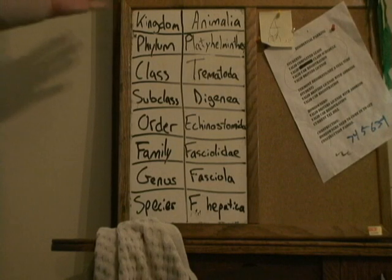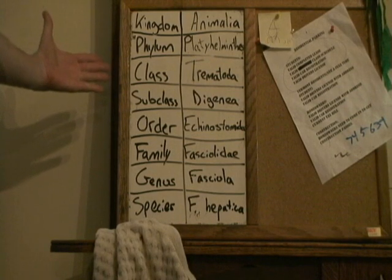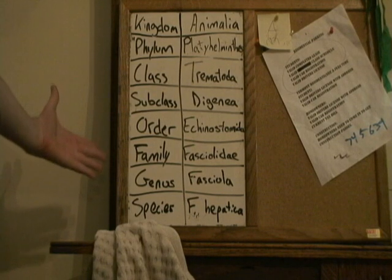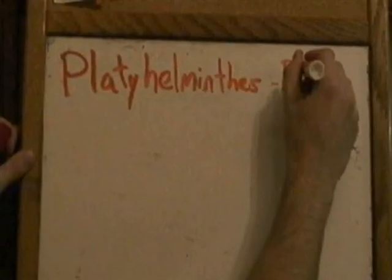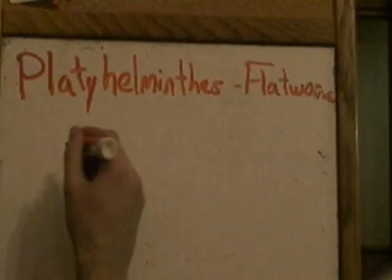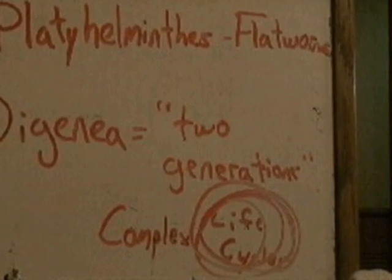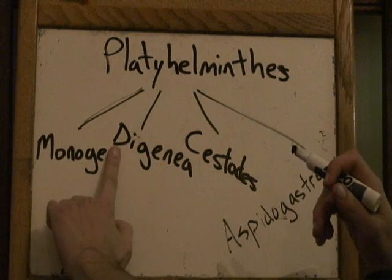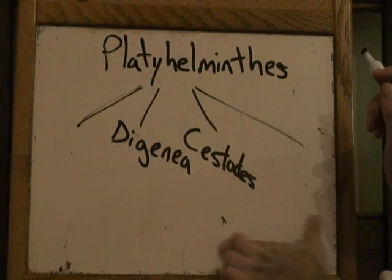The sheep liver fluke belongs to the kingdom Animalia, the phylum Platyhelminthes, the class Trematoda, subclass Digenea, order Echinostomida, family Fasciolidae, and genus Fasciola. Most importantly, Fasciola hepatica belongs to the phylum Platyhelminthes, or the flatworms, and the subclass Digenea, which means two generations. This group is commonly called the flukes, and their name refers to their tendency to have very complex life cycles. Of the four strictly parasitic subclasses of Platyhelminthes, only Cestoidea, the tapeworms, and Digenea, the flukes, have impacting virulence on humans and livestock.